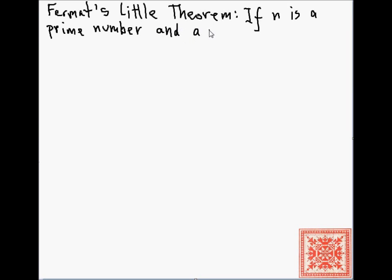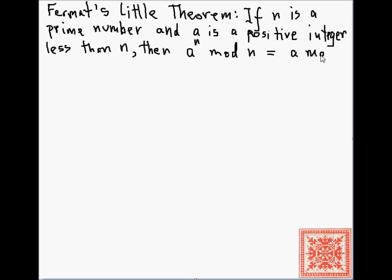One and n itself. And a is a positive integer less than n. Then a to the n modulo n, so the remainder of a to the n when divided by n is equal to a modulo n.